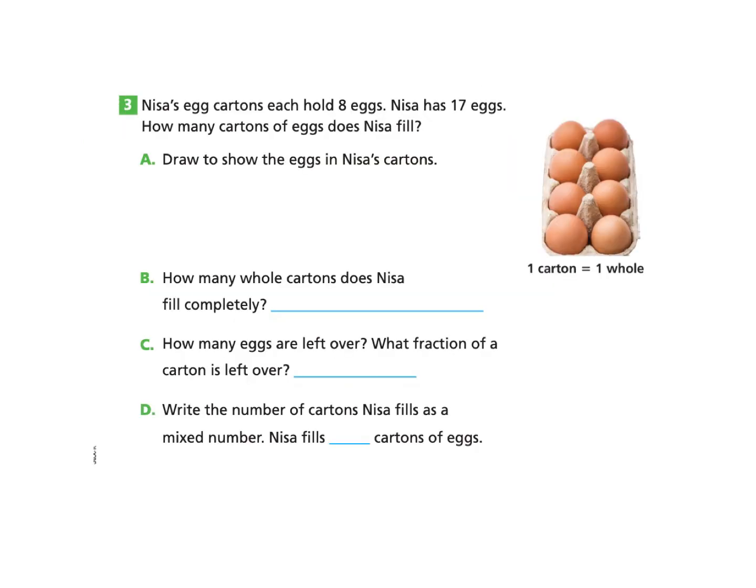Let's look at the next page, page 375, part three. Nisa's egg cartons each hold eight eggs. Nisa has 17 eggs. How many cartons of eggs does Nisa fill? If you'd like to try this on your own and come back, you may do so or follow along with me. So what I'm going to do is I'm going to draw what it says in part A, draw to show the eggs in Nisa's cartons. So one carton has eight eggs. So I'm just going to go ahead and draw 17 eggs and then put them in the groups of eight for what's available in each carton. Here we have 17 eggs and I am putting the groups of eight in a carton and I have one egg leftover, which I will put in a carton.